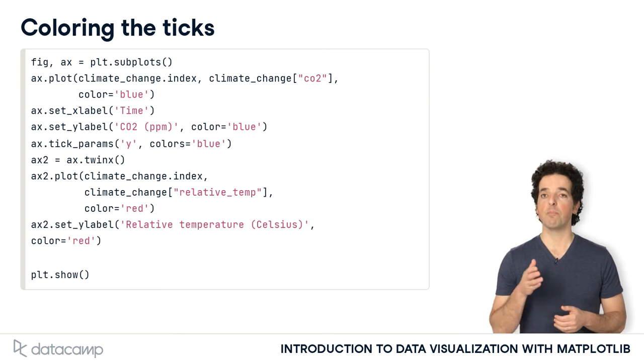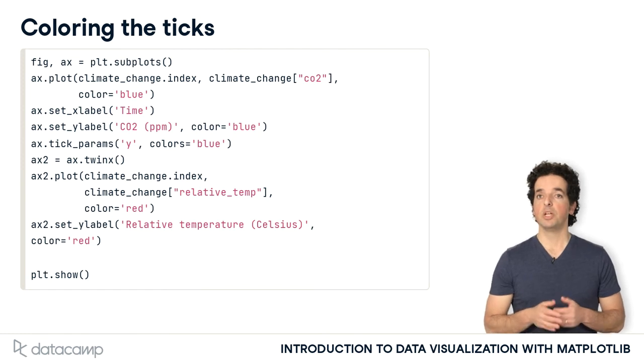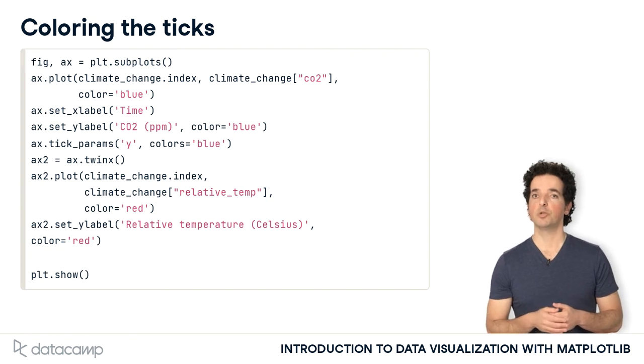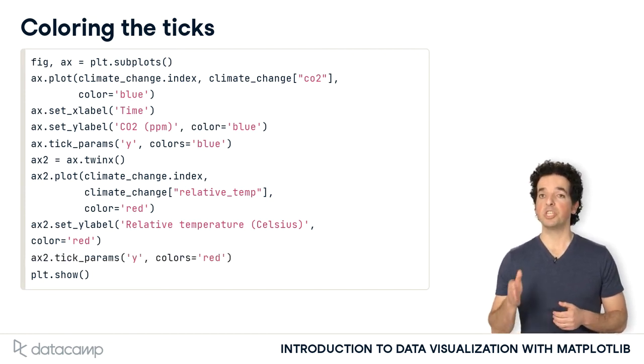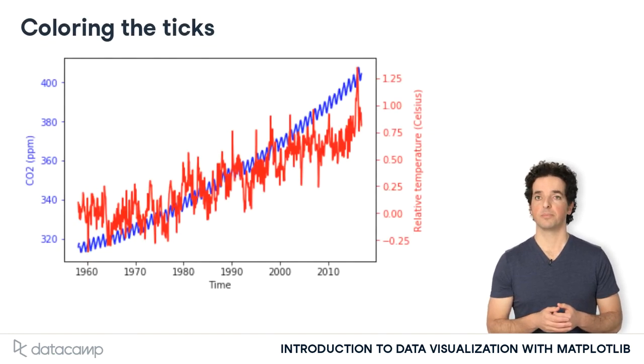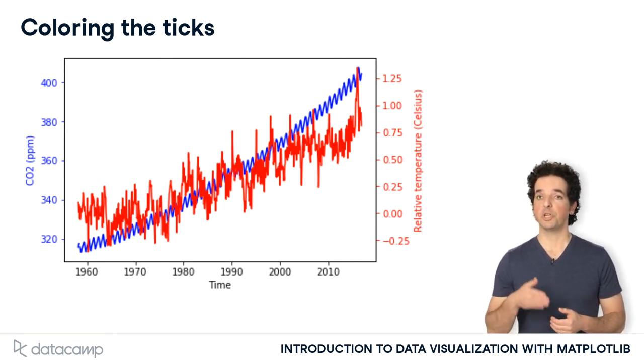Pointing to the fact that we are modifying the parameters of the y-axis ticks and tick labels. To change their color, we use the colors keyword argument, setting it to blue. Similarly, we call the tick_params method from the twin axes object, setting the colors for these ticks to red. Coloring both the axis label and ticks makes it clear which scale to use with which variable.